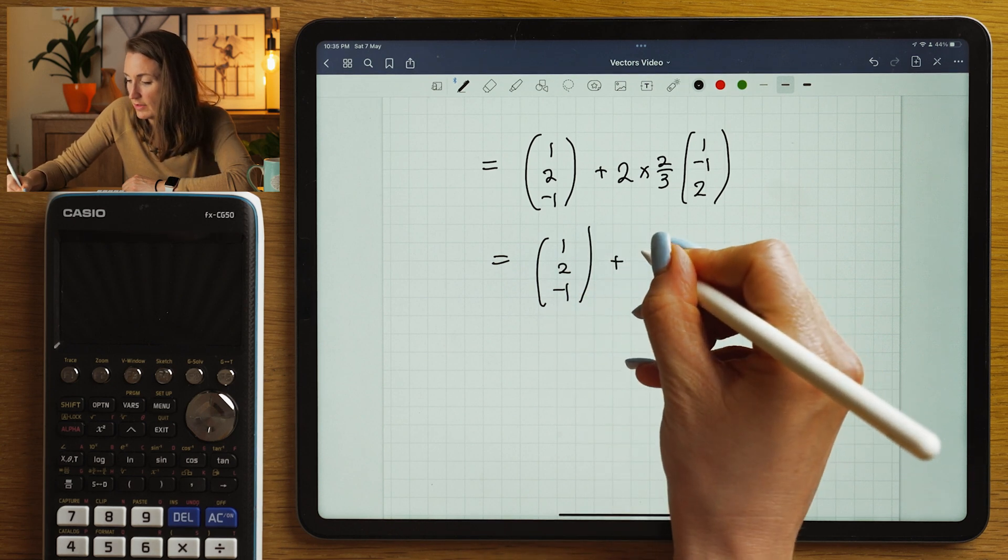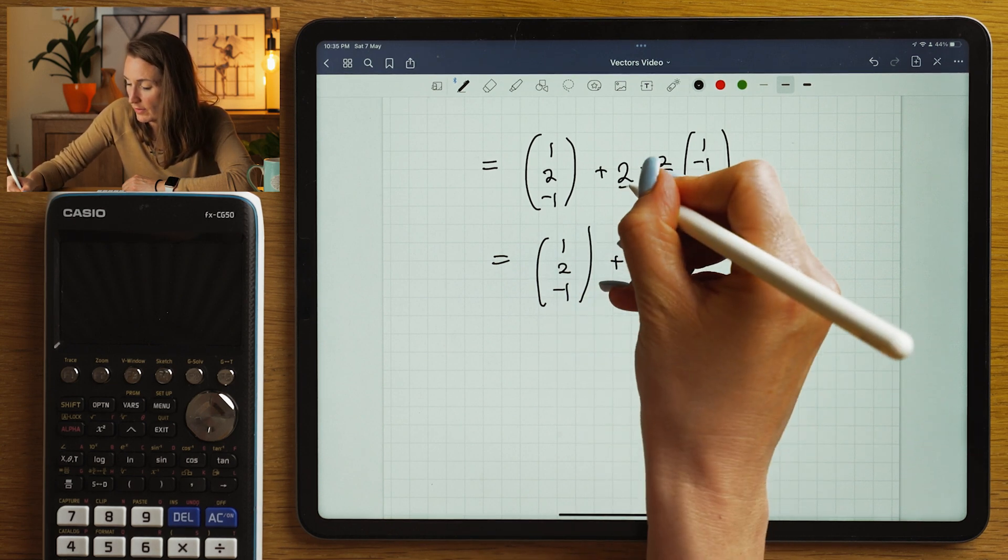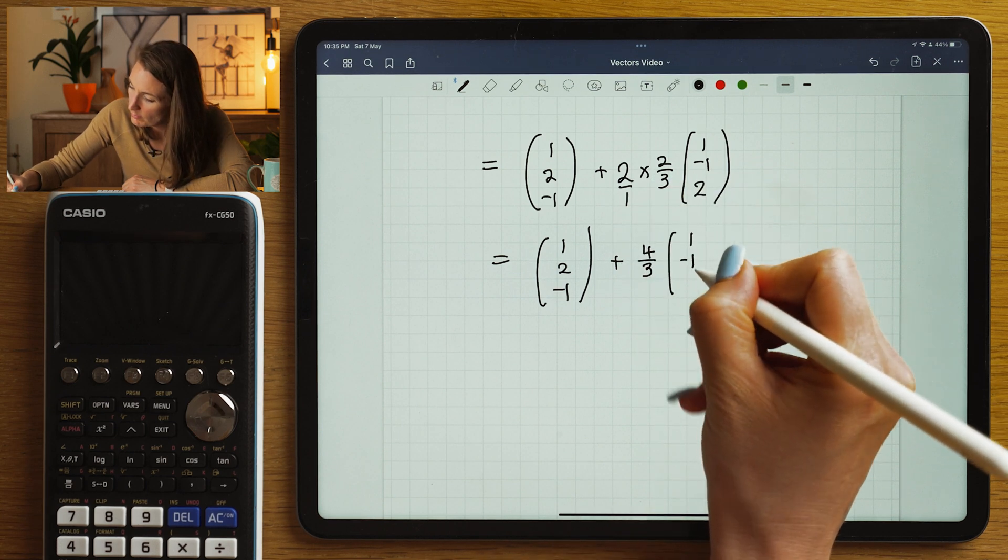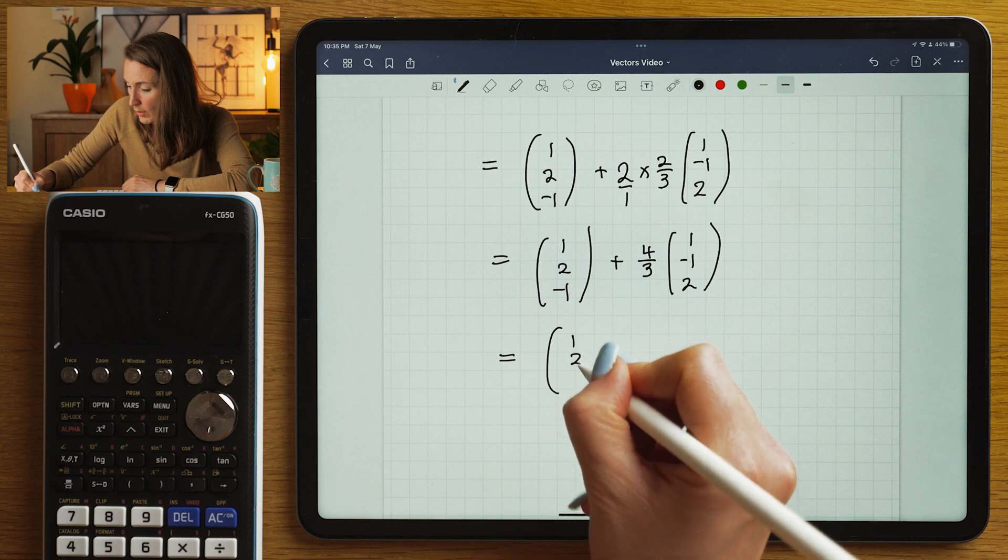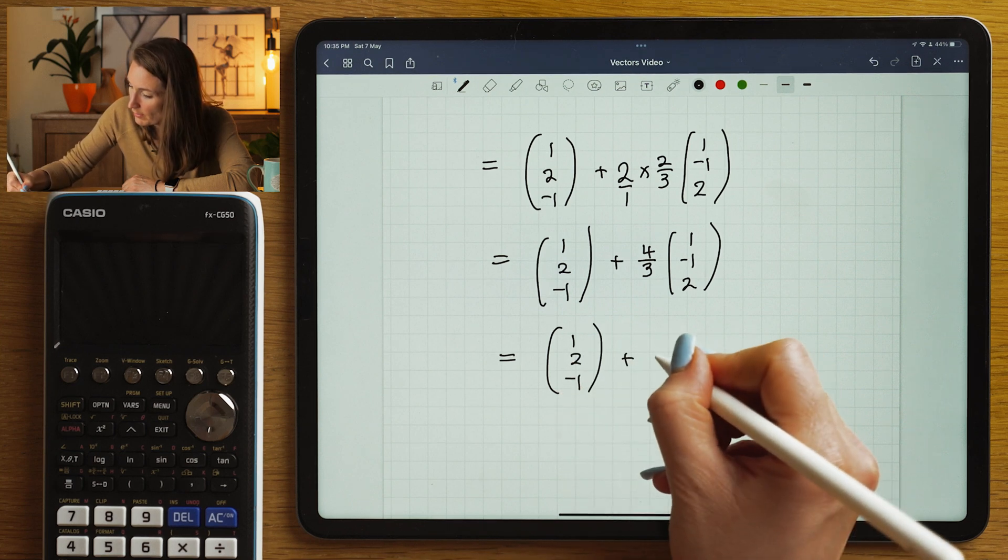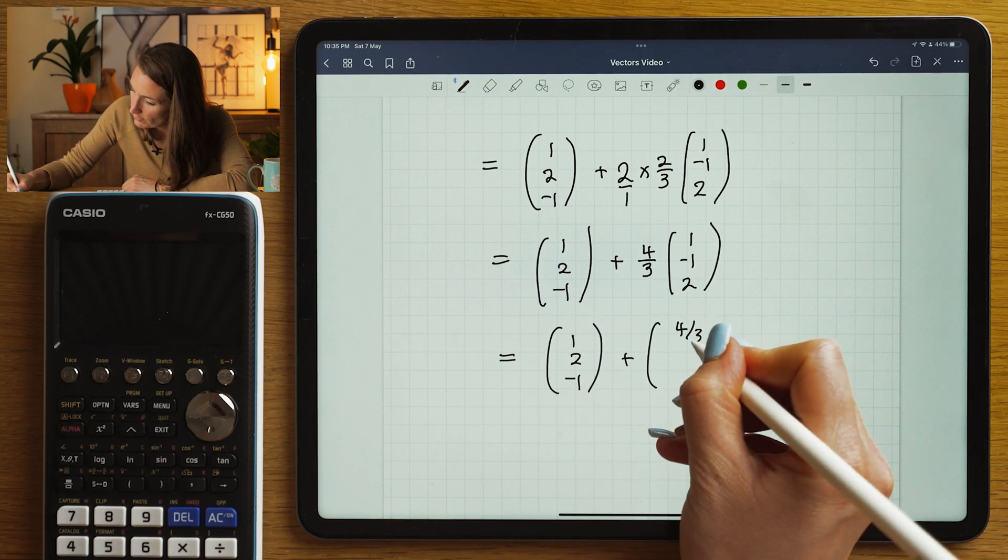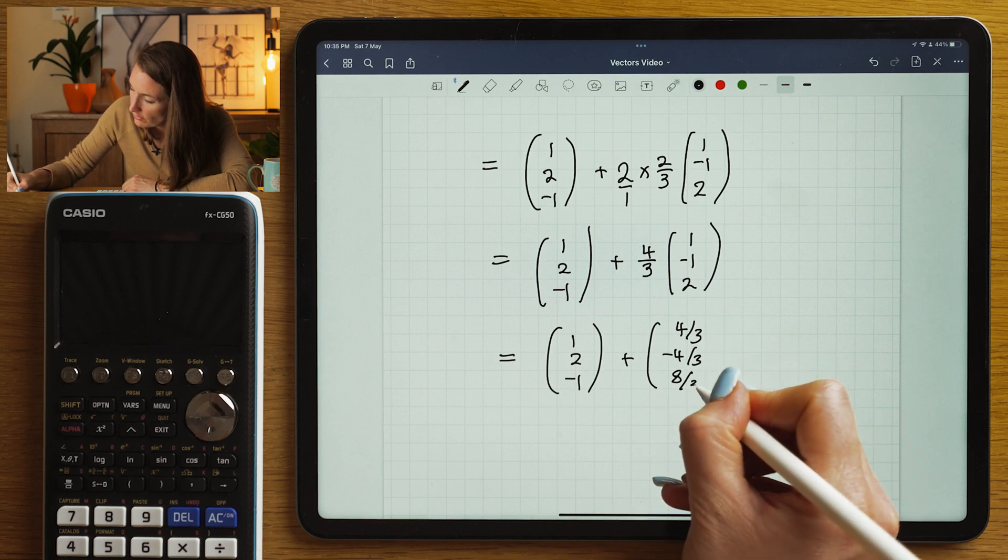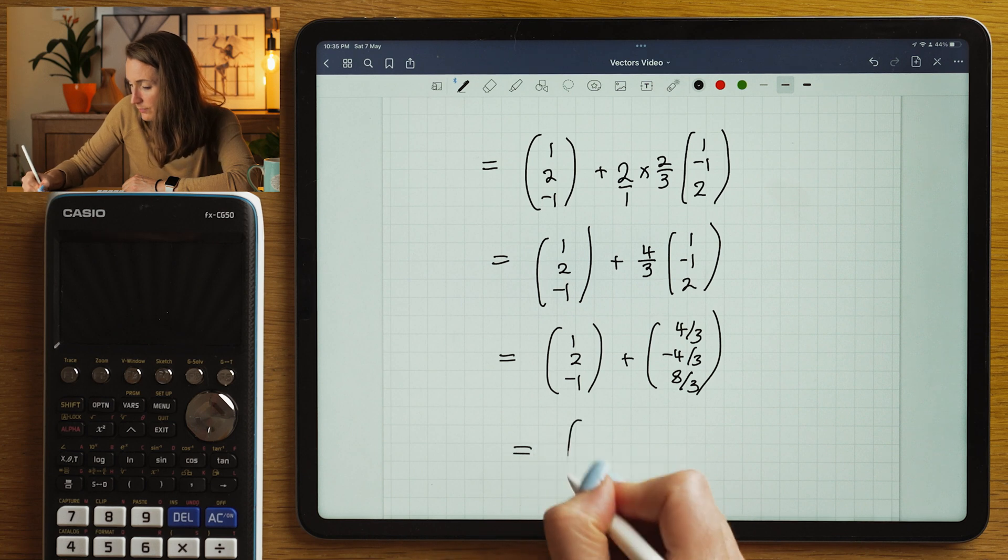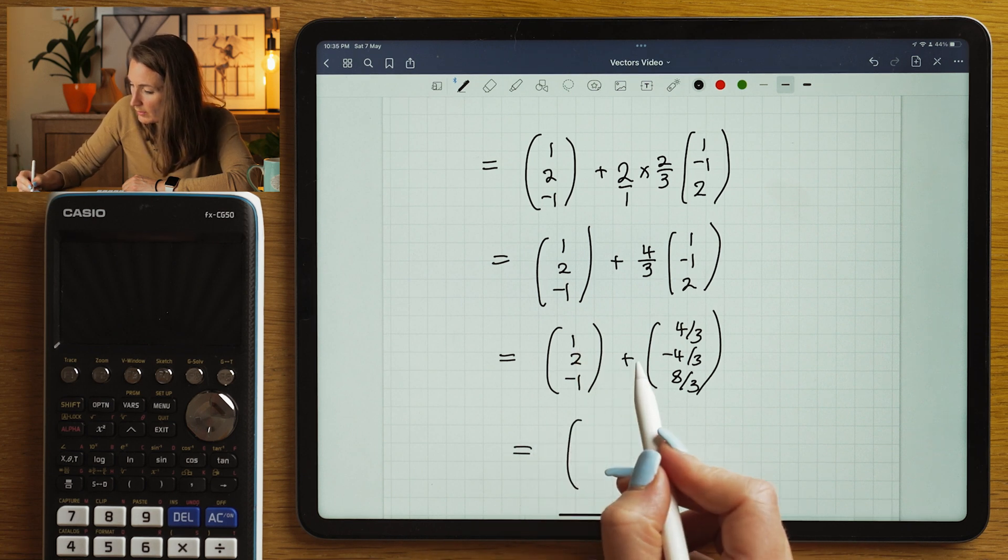Two times two thirds is four thirds. One minus one, two. So this would be the vector (1, 2, -1) plus (4/3, -4/3, 8/3). And let's work that out. So this would be one. I'm going to first of all actually put these out of three to make it easier. It's going to be 3/3, 6/3, and -3/3.